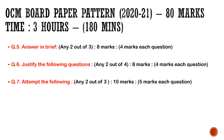For SP students, you have letter writing which is very scoring, but for OCM, question number seven has two brief answers instead. Attempt the following — any two out of three — is ten marks total, meaning one question is five marks each.